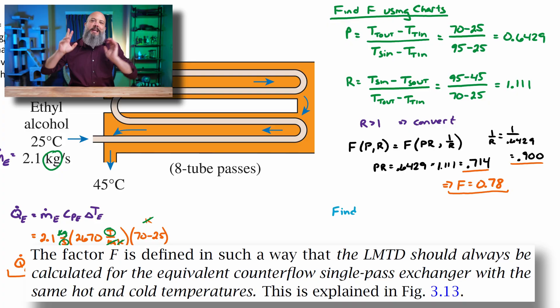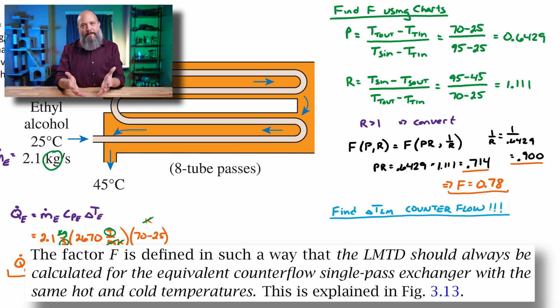All right, two steps down, delta T_LM, last part. This has to be the counterflow LMTD equation, right? The shell and tube design is not parallel flow. The water and the ethyl alcohol kind of have their inlets and outlets matched up.